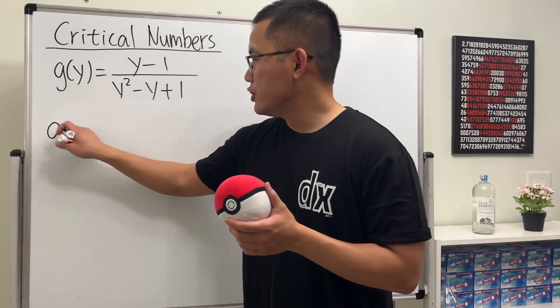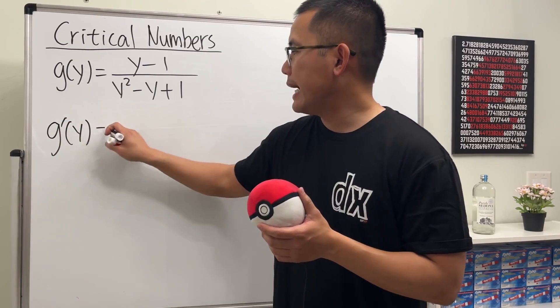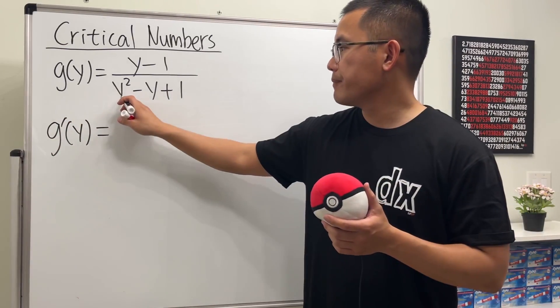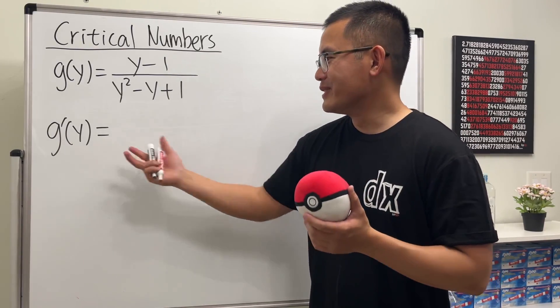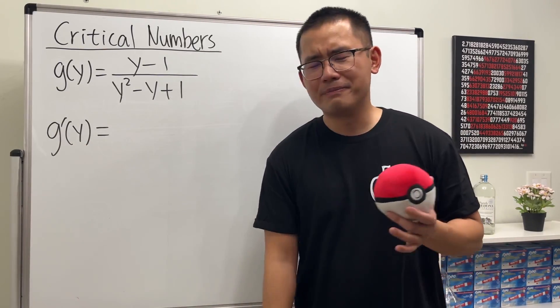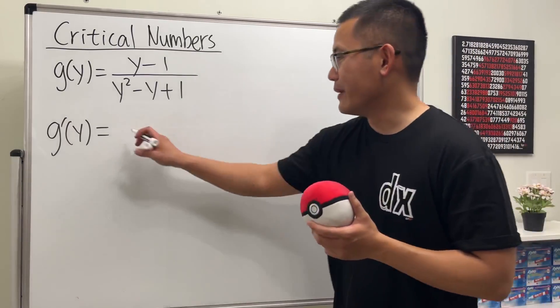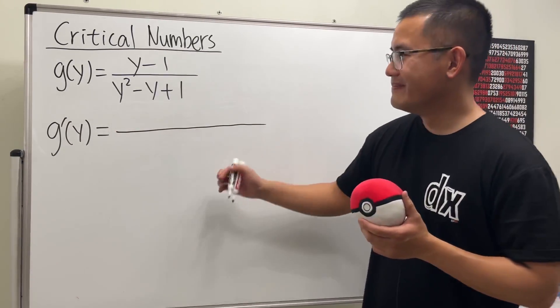So, here we go. g prime of y, we have to use the quotient rule here. And I don't really like that the problem uses y for the input variable, but we just have to deal with it. Anyway, quotient rule in action, because it's a quotient.